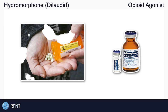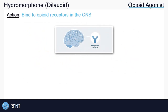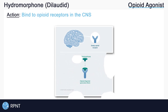Hydromorphone belongs to the opioid agonist drug classification, which means that it binds to and activates opioid receptors, which are found in the central nervous system, or CNS. Here, you can see that we have these empty opioid receptors throughout the CNS. Hydromorphone would bind to these receptors, triggering the opioid effects.